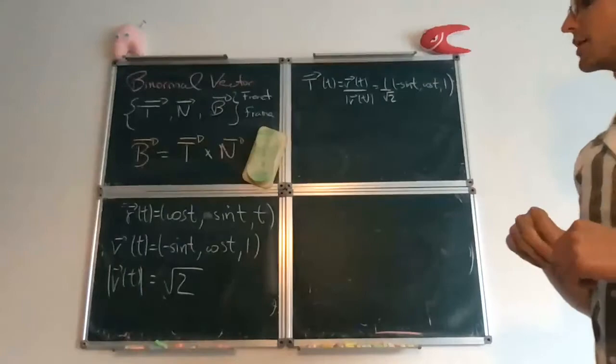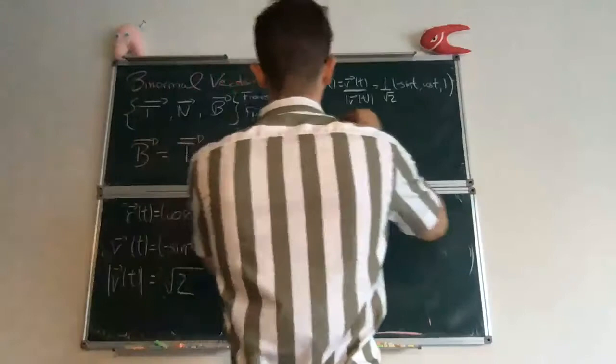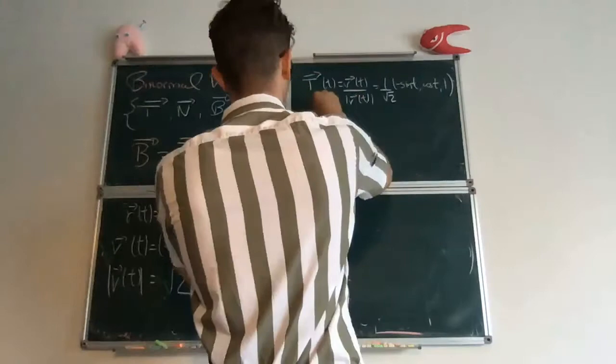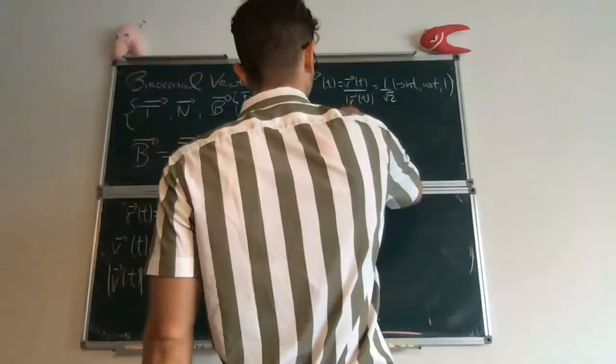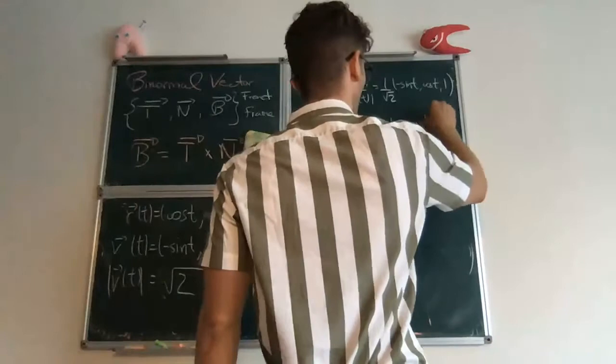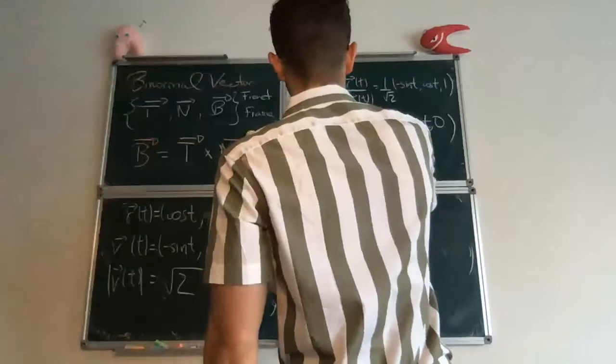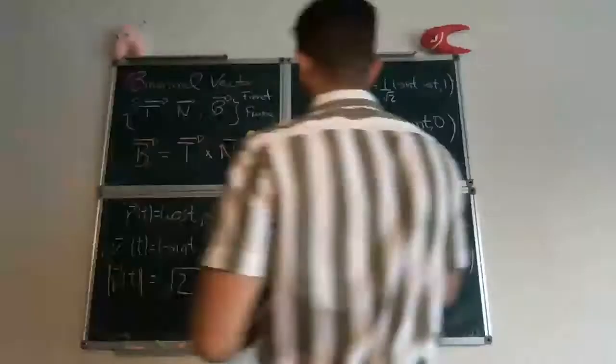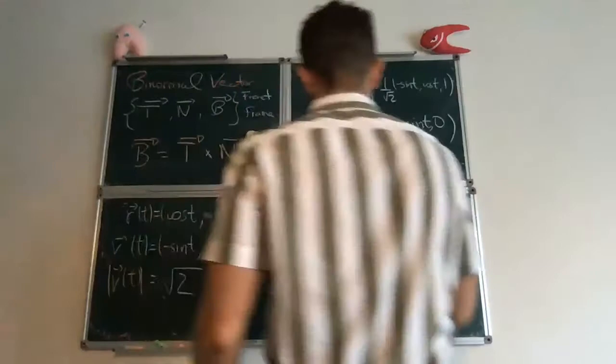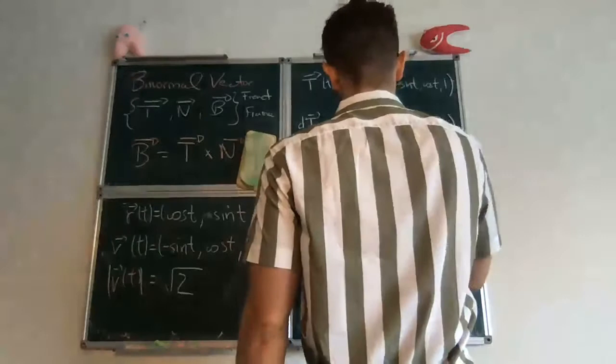Then the normal vector requires the derivative of the tangent vector. So as you can see, this can become a bit long of a computation. And this gives you this thing. And then the norm of this vector was also required for the normal vector. And so this has norm 1 over root 2. And finally, you find that the normal vector is this.